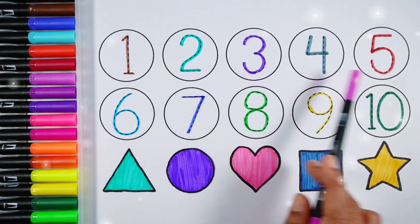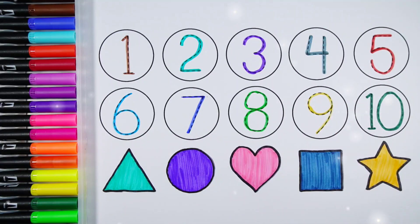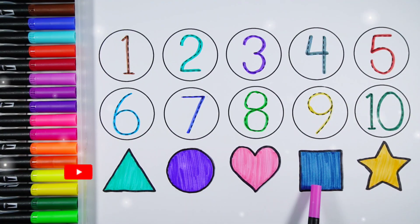1, 2, 3, 4, 5, 6, 7, 8, 9, 10. Triangle, circle, heart, square, star.